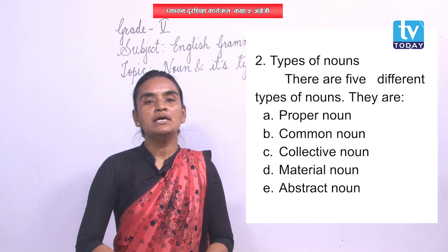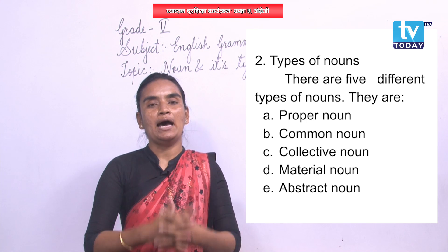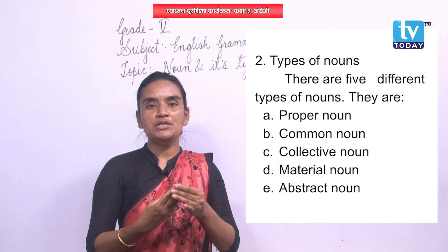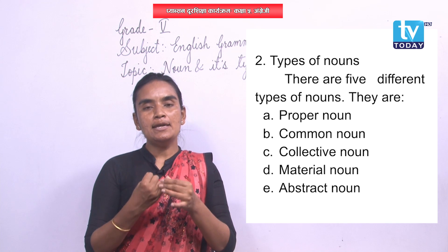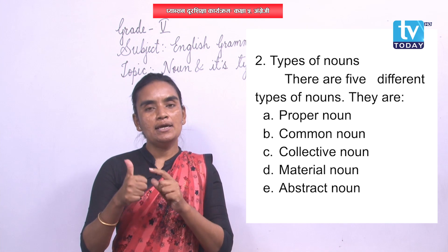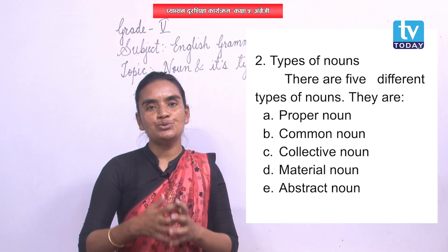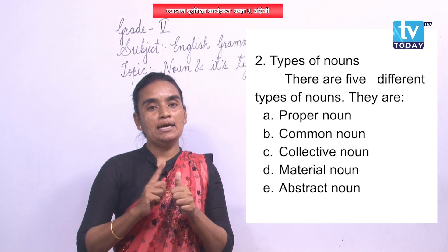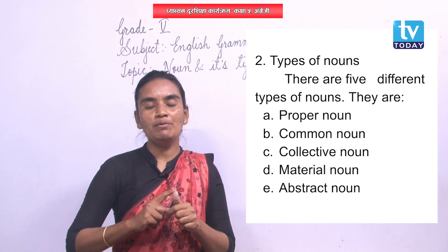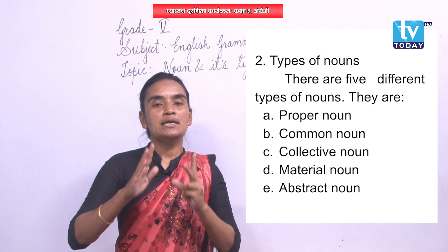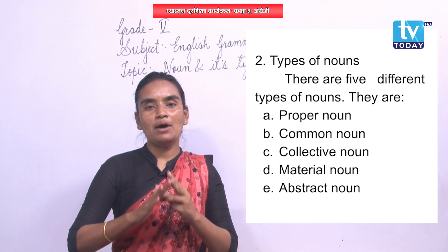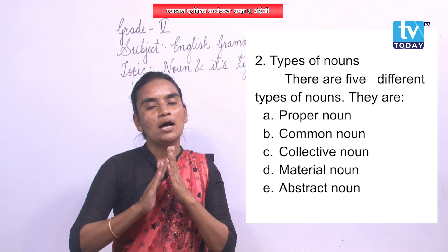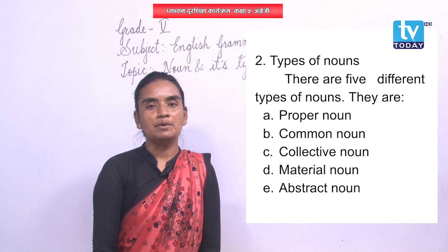Please write down the five types of noun. Number one: proper noun. Number two: common noun. Number three: collective noun. Number four: material noun. Number five: abstract noun.